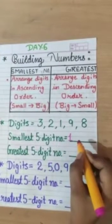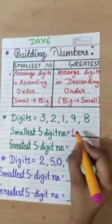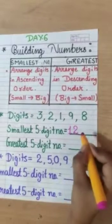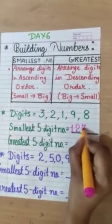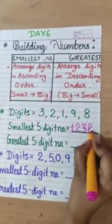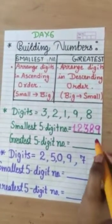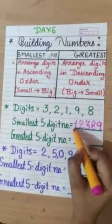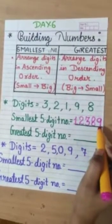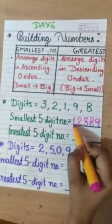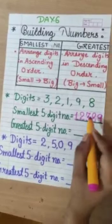So, 1 will come at the first place. Then, after leaving 1, the next digit will be 2, then 3, then 8, then 9. So, this is the smallest 5 digit number as I have arranged all the digits in ascending order. Means the smallest at the first and biggest at the last.